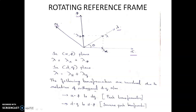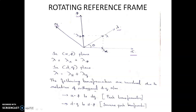They appear as stationary when we are viewing those quantities from the D and Q axes which are rotating. That is why we are using a rotating reference frame. Alpha-Beta is the stationary reference frame, and D and Q form the rotating reference frame.